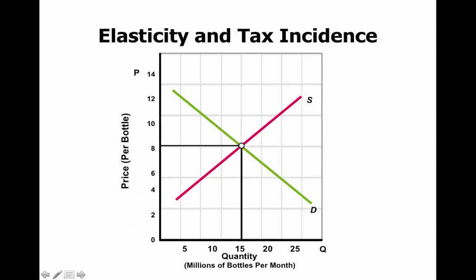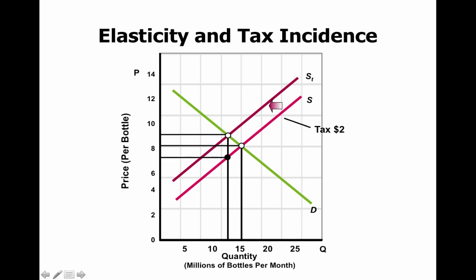Here is our efficient market. We're talking about bottles of wine — we will sell 15 million bottles per month at $8 per bottle. Now let's say we put an excise tax on this. Taxes are leftward shifters of supply, so instead of producing 15, we're now going to produce a lower quantity. It's a $2 tax. Where does this $2 tax show up? It shows up right here — a $2 per-unit tax equals a vertical distance of $2 on the graph.